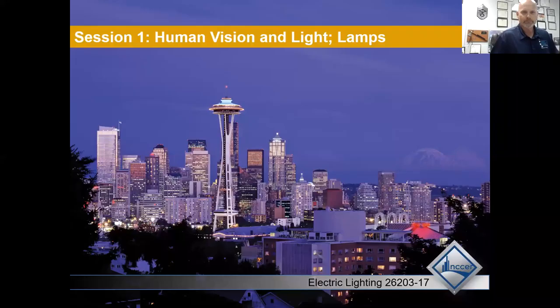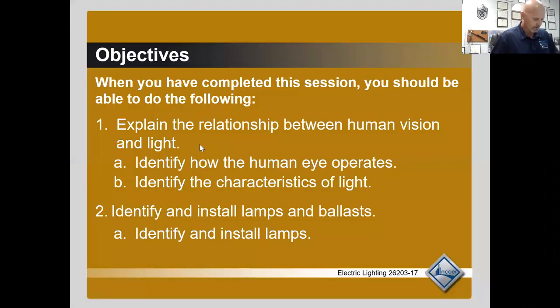We're going to move into module 26203, looking at electric lighting. The objectives for this module are to identify how the human eye operates and identify the characteristics of light.